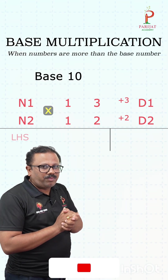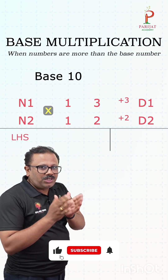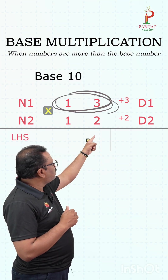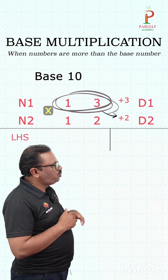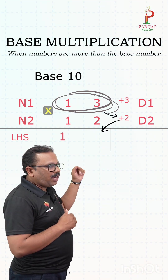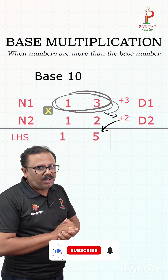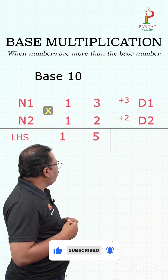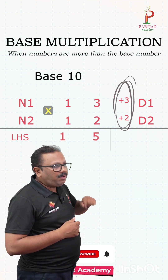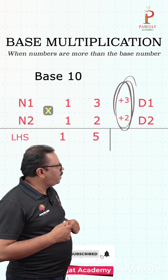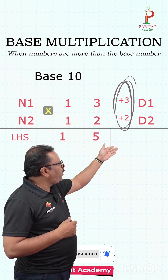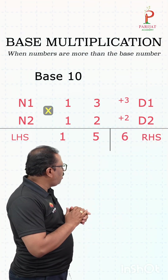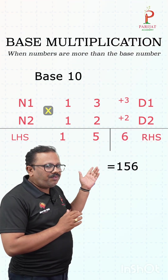Now to get the left-hand part of the answer we just have to do cross addition. So the cross addition is 13 plus 2, which comes to 15 — write that down on the left-hand side of the answer. Then we multiply d1 by d2 for the right-hand side, so 3 times 2 becomes 6. Our final answer becomes 156.